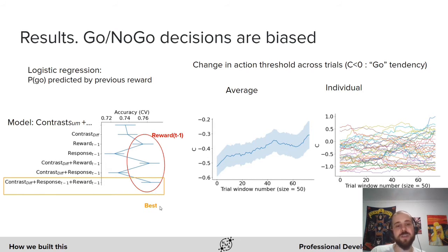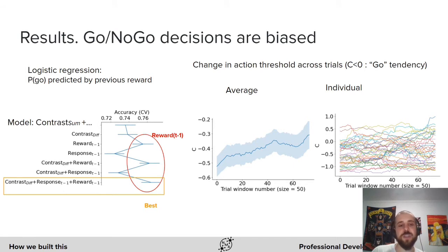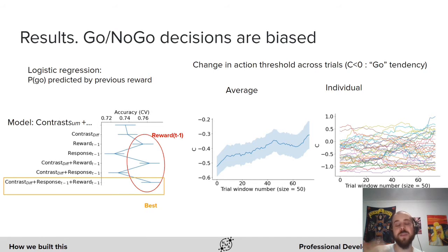Furthermore, the best model overall also had the response at the previous trial as a predictor. Checking the coefficients, we saw that animals are more likely to respond when they were rewarded at the previous trial, and also more likely to respond when they responded in the previous trial.